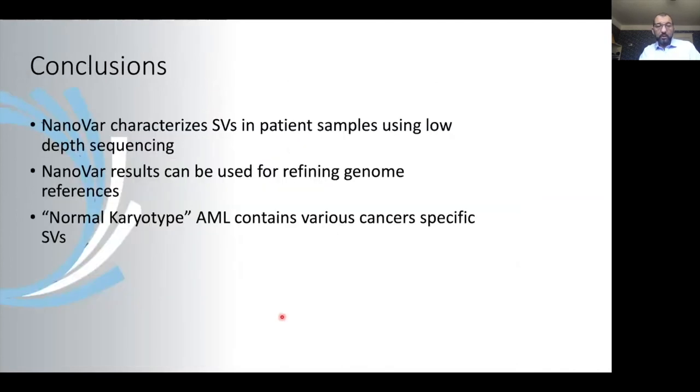So to conclude, I wanted to let you know that NanoVAR characterizes structural variants in patient samples using low-depth sequencing. NanoVAR results can be used for refining genome references. And the so-called normal karyotypes in AML actually contain various cancer-specific structural variants.